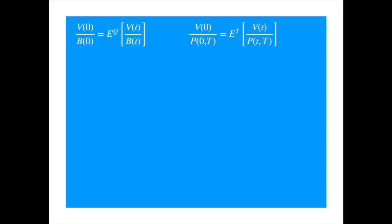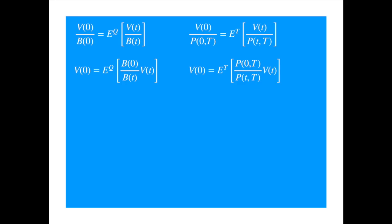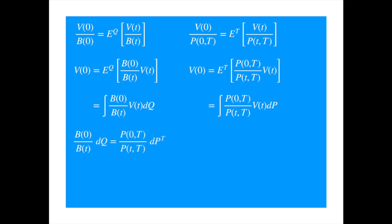We can shift B in the denominator of the first equation to the right hand side, and because it's known, take it inside the expectation. We can do the same with the equation on the right hand side. Writing the expectation as the integral with respect to the probability measure, we get delta Q on the left and delta P on the right. Both equations represent the price of the same asset, so the right hand sides must be equal. Because this relationship must hold for any asset, we can rearrange to get the Radon-Nikodym derivative of the new probability measure with respect to the old one.